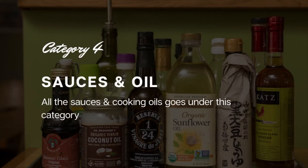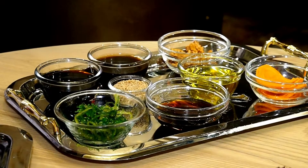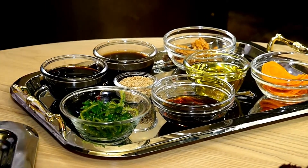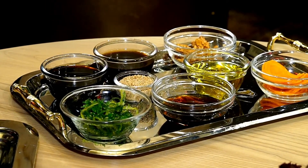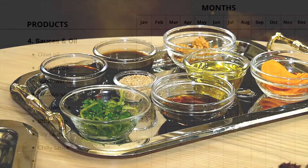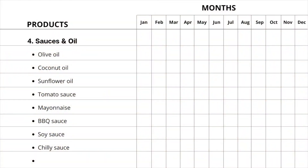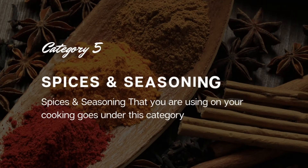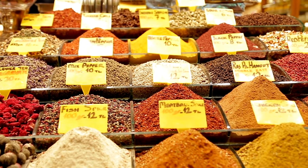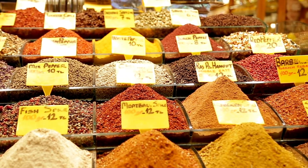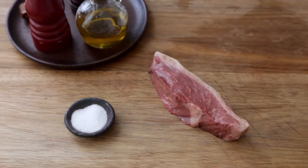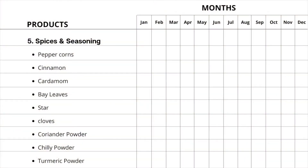The fourth category is sauces and oils. Sauces like tomato, barbecue, soy, etc. and oils like coconut oil, olive oil, etc. are included in this category. The fifth category is spices and seasoning — all the spices and seasoning items that you are using in your cooking go under this category. Here is my list of spices and seasoning items.